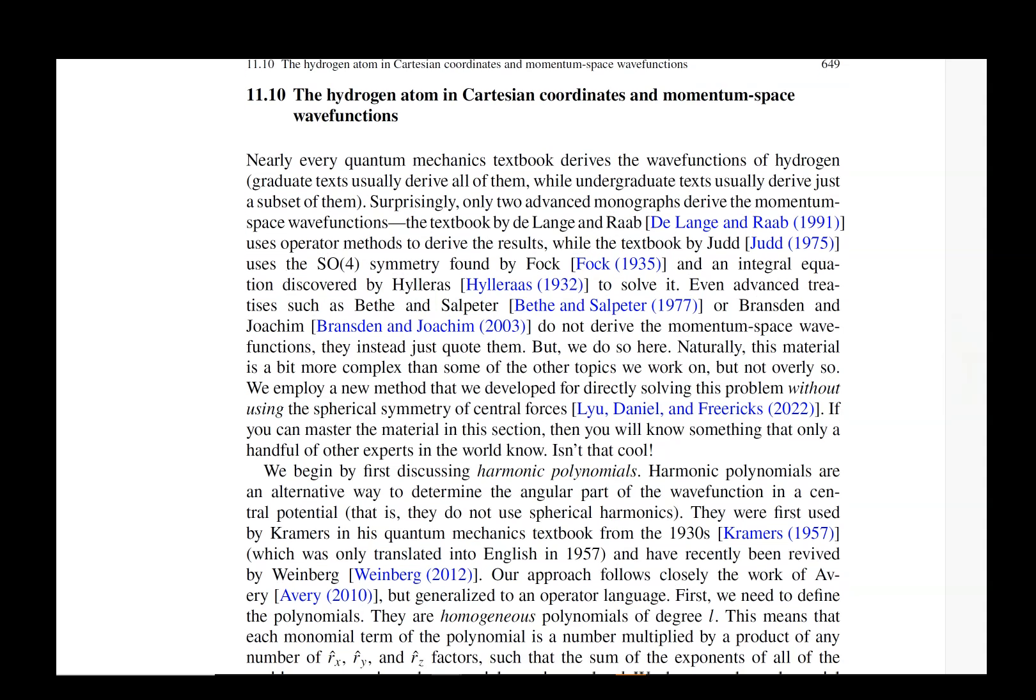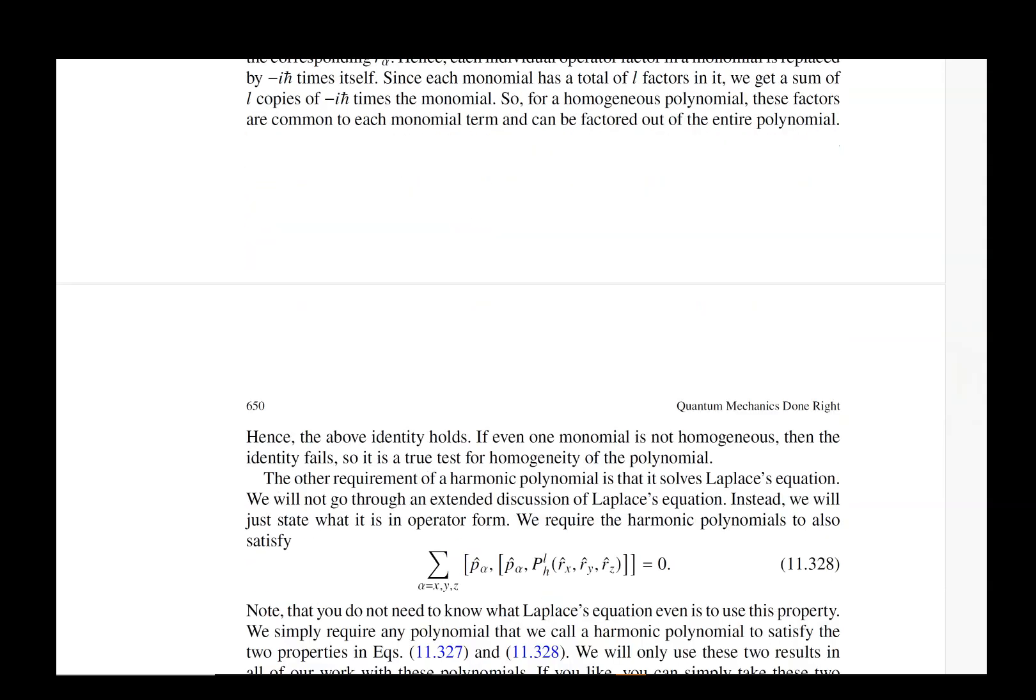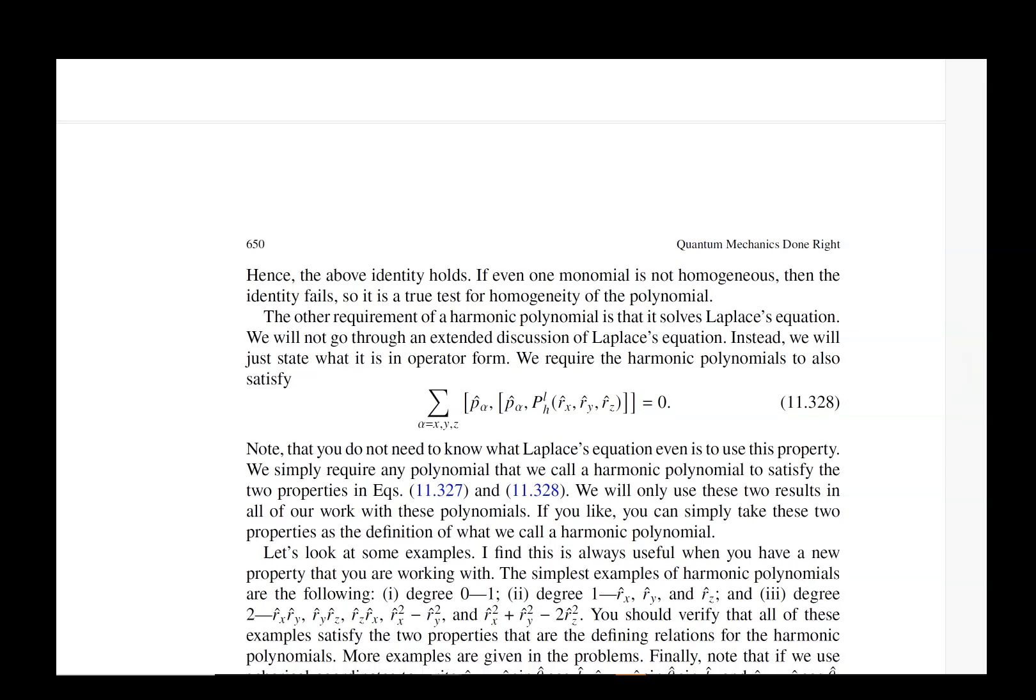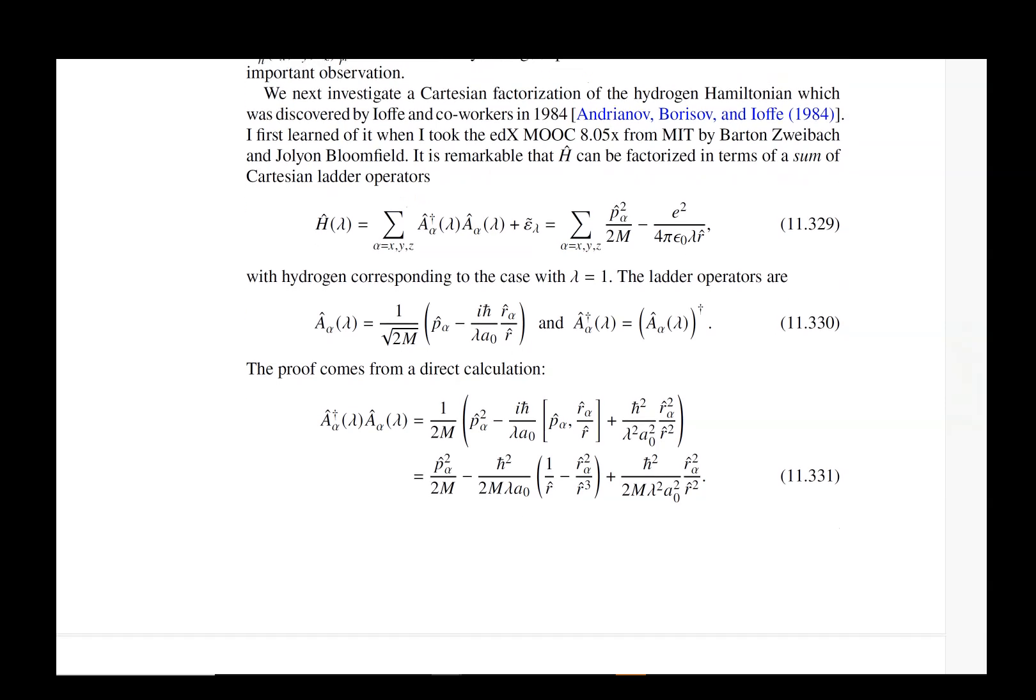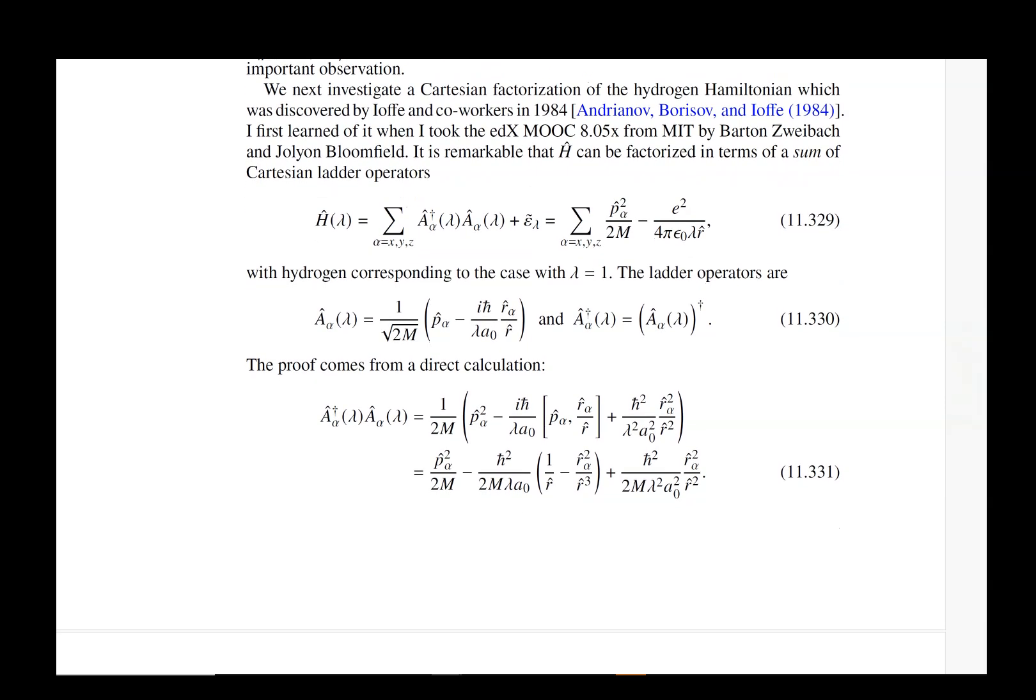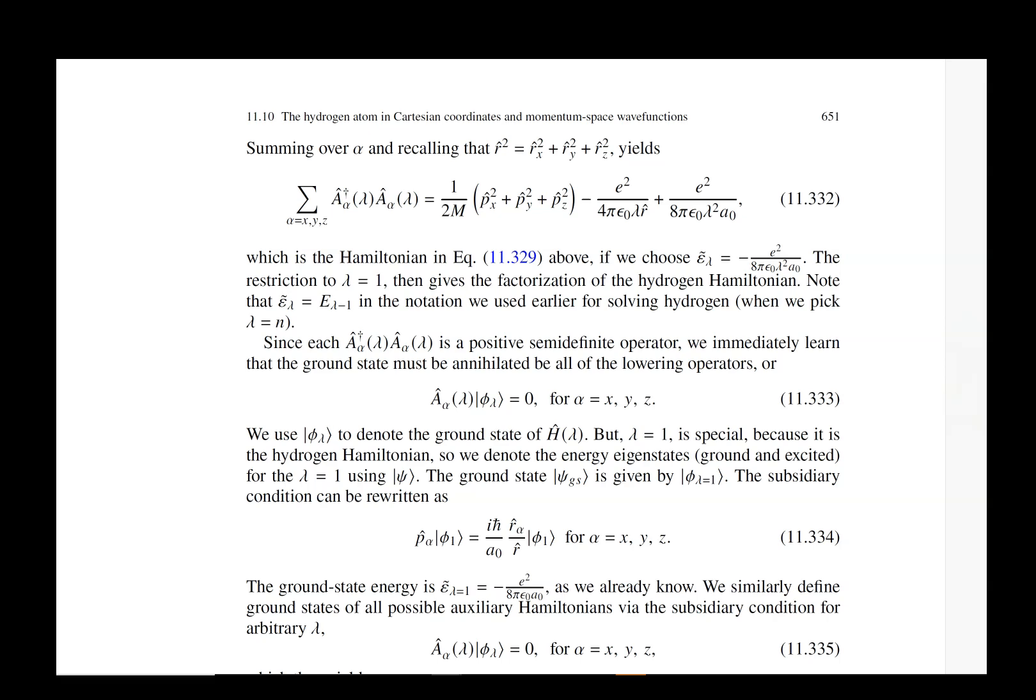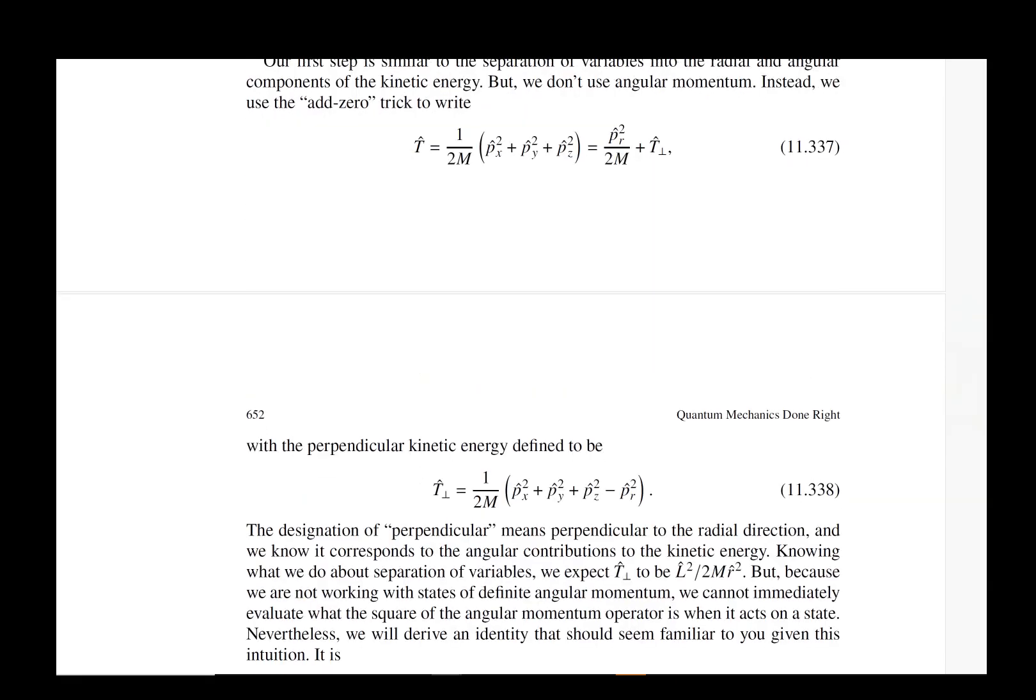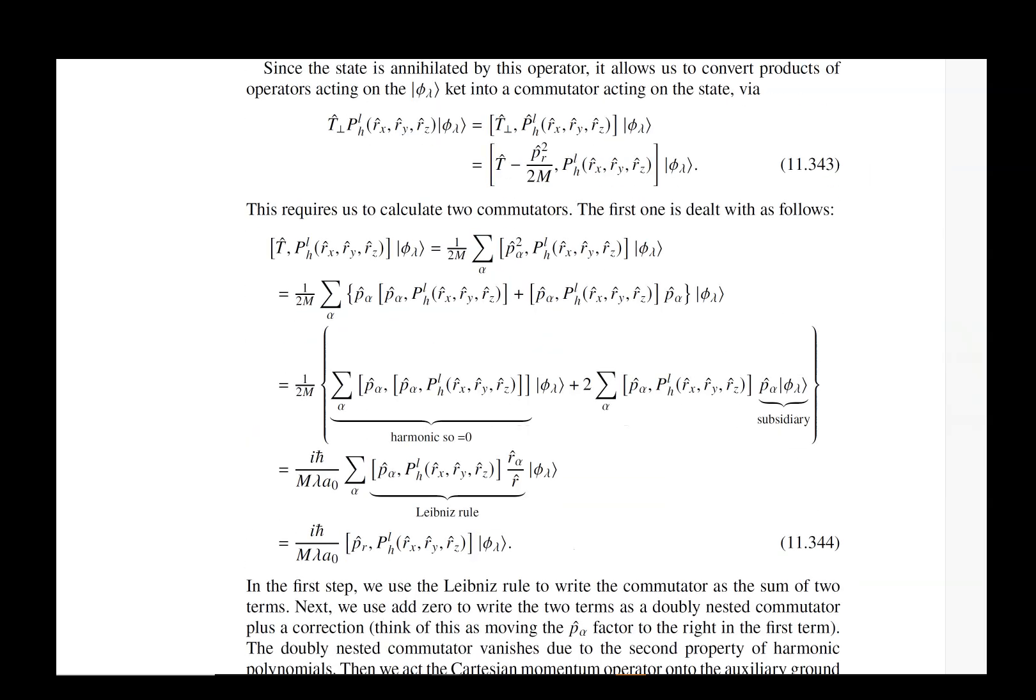We have a very interesting thing that only works for the Coulomb problem as far as I know: a Cartesian factorization. This was worked out by Yaffe and collaborators in 1984 when supersymmetric quantum mechanics was very popular. They didn't work out how to get the wave functions, but in this chapter we show you how you get the wave functions from this method.